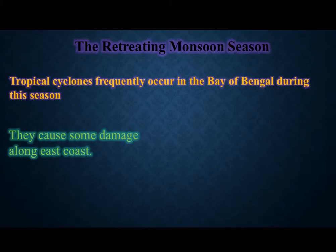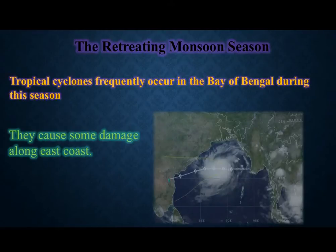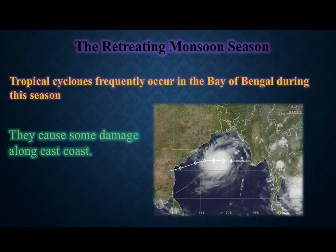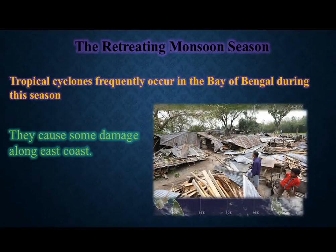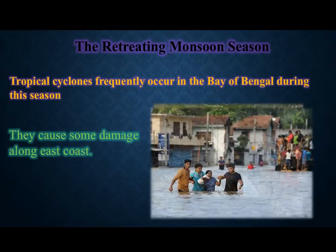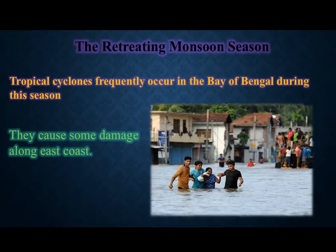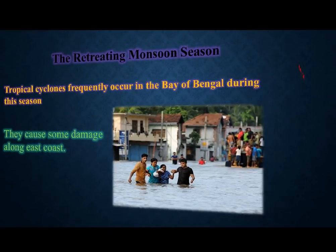There are a lot of issues happening because of the retreating monsoon season. You can see here what exactly the reasons are behind this — what happens because of the wind flow, and because of the cyclones and floods. You can see the images here.